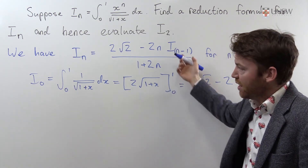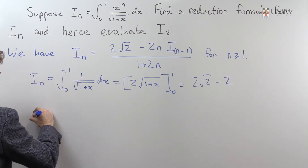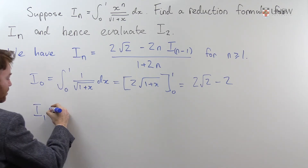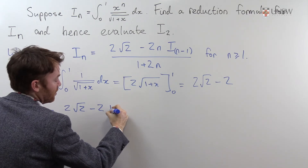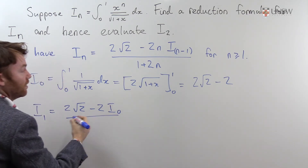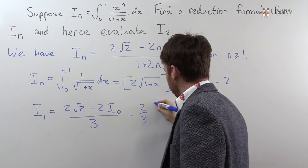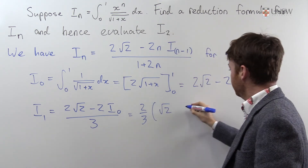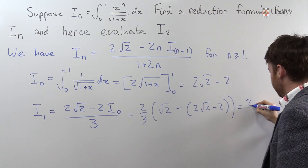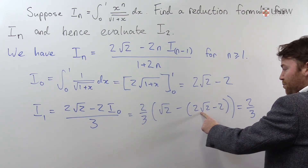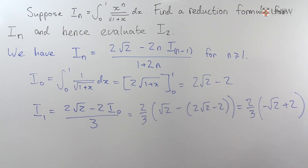We can use I0 and our reduction formula to build up more integrals, such as I1. Using the reduction formula, I1 equals 2 root 2 minus 2 times 1 times I0, divided by 1 plus 2. Substituting I0 gives I1 equal to 2 root 2 minus 2 root 2, which is negative root 2, and then minus minus 2 is plus 2. So I1 equals 2 minus root 2, divided by 3.